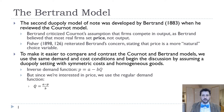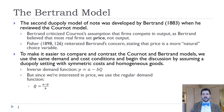We set up the same problem as Cournot. We have the same inverse demand function, P equals A minus BQ. But since we're interested in price, we use the regular demand function, solving for Q to get A minus P over B. Again, symmetric costs, homogeneous goods — everything else is the same.